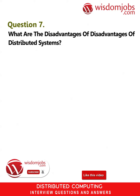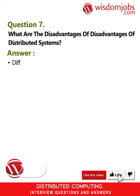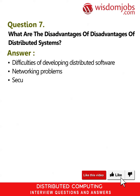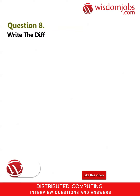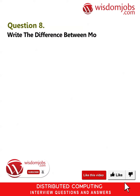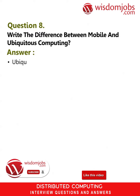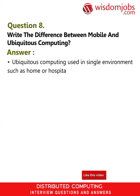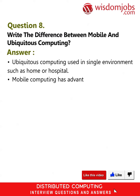Question 7: What are the disadvantages of distributed systems? Answer: Difficulties of developing distributed software, networking problems, security problems. Question 8: Write the difference between mobile and ubiquitous computing. Answer: Ubiquitous computing is used in a single environment such as home or hospital. Mobile computing has the advantage of using different devices such as laptops and printers.